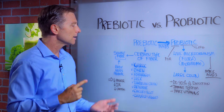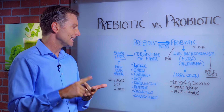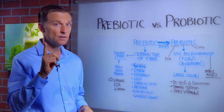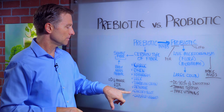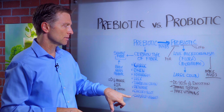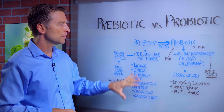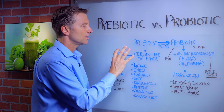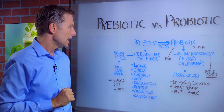Examples would be garlic, onions, asparagus, leeks, dandelion greens — which by the way are very, very healthy — artichokes, chicory root, and cultured vegetables. These plants and vegetables actually have certain fibers that will feed the microbes.